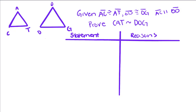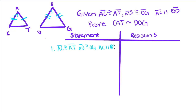Today we're going to do another kind of proof — proving triangles are similar. We're told that AC is congruent to AT, OD is congruent to OG, and AC is parallel to OD. We'll just copy our given.